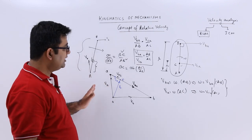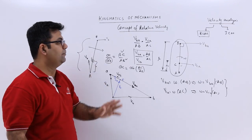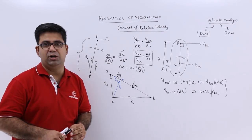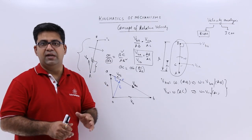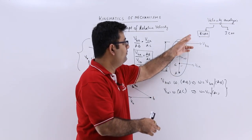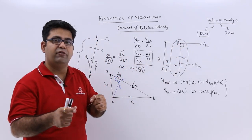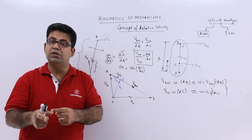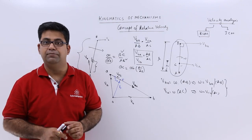This is how we analyze velocities of points on a link using the relative velocity method. In the next video, we'll take this concept forward and look at another case of RVM where we find velocities of points on the same link.